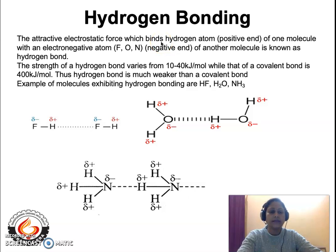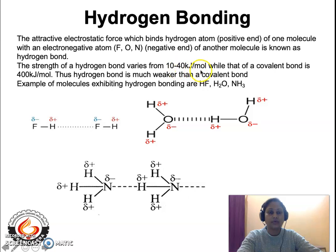Hydrogen bonding is in fact a very weak bond, much weaker than a covalent bond. The strength of a hydrogen bond is usually 10 to 40 kilojoules per mole, while a covalent bond has a strength of 400 kilojoules per mole. Thus hydrogen bond is much weaker than a covalent bond.